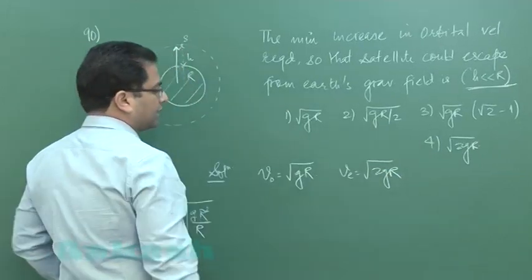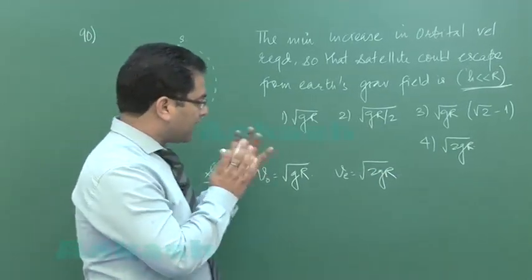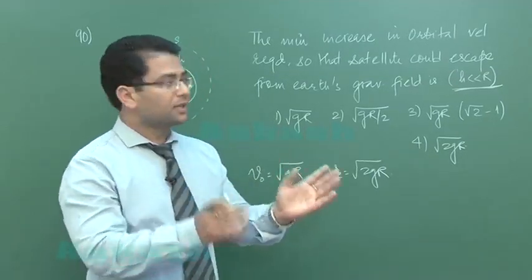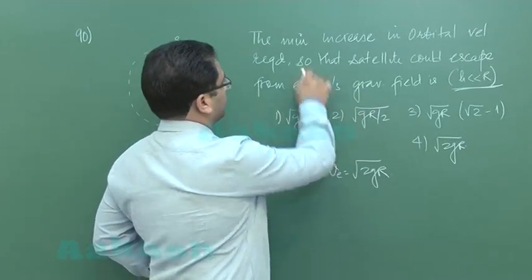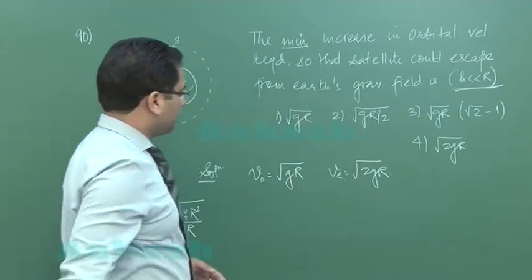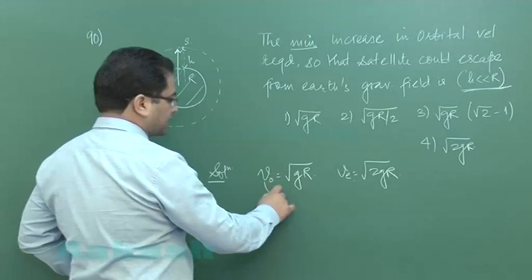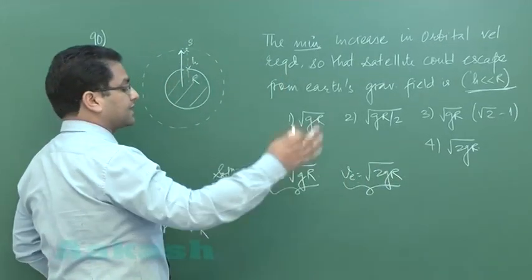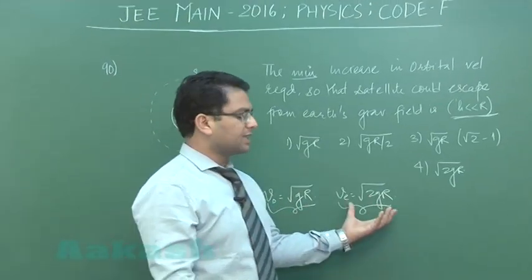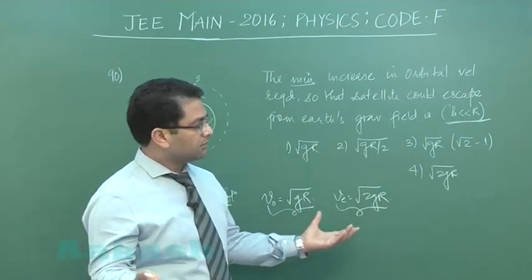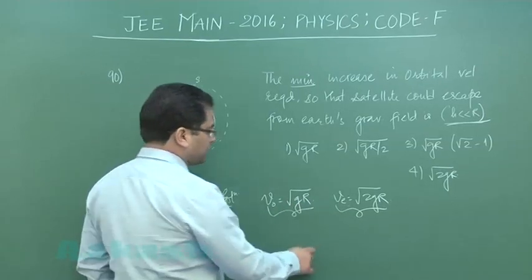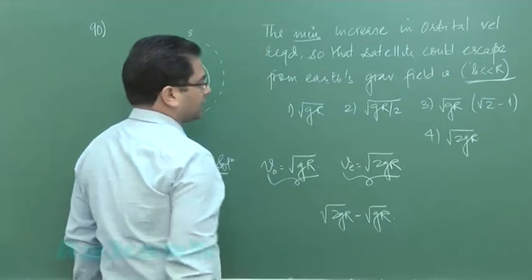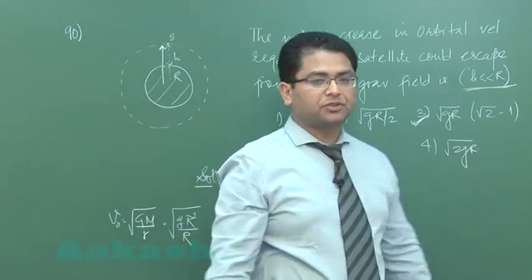The escape velocity is √(2gr). Escape velocity by definition is the minimum velocity so that a satellite would escape. Right now it has this much velocity, and if it acquires this minimum velocity, it would escape the gravitational field. Greater than this would also work, but we require the minimum one. So the increase would be √(2gr) - √(gr), which exactly resembles option number 3.